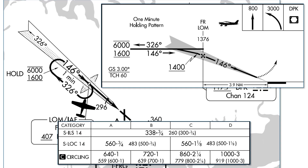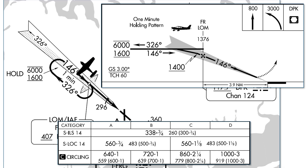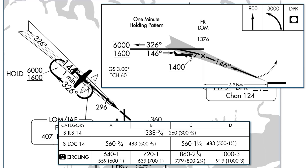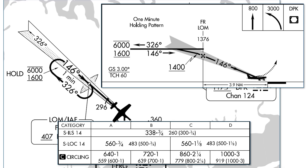We'll bring in the profile view, which looks at the approach from the side, as well as the minimums section. We're going to be approaching Frick from an initial altitude, typically one assigned by ATC. What we see in the two bars is the course reversal altitude — as long as we're in the course reversal, we should be between 1,600 and 6,000 feet. Preferably we'll aim to be at 1,600 as we're completing the procedure turn, because we'll need to go down lower. Once established on the final approach course, we can go down to 1,400 feet. On the ILS, 1,400 feet is the glide slope intercept altitude, as shown by the lightning bolt symbol. We'll stay at 1,400 feet until intercepting the glide slope, then begin a descent to the decision altitude of 338 feet.